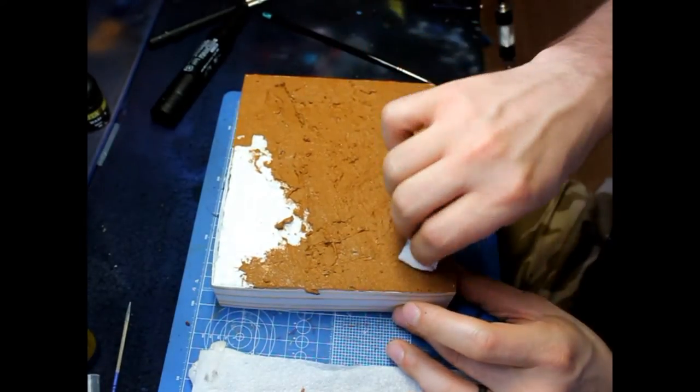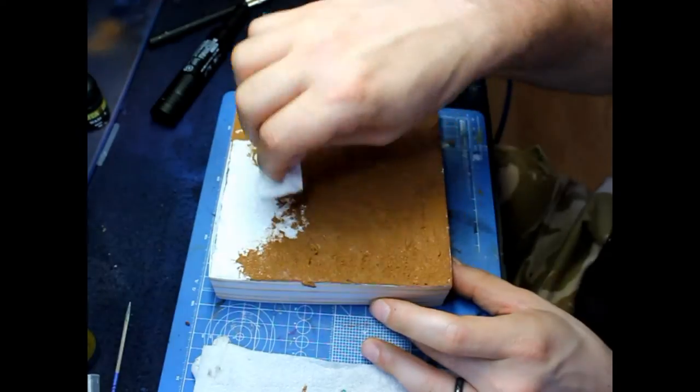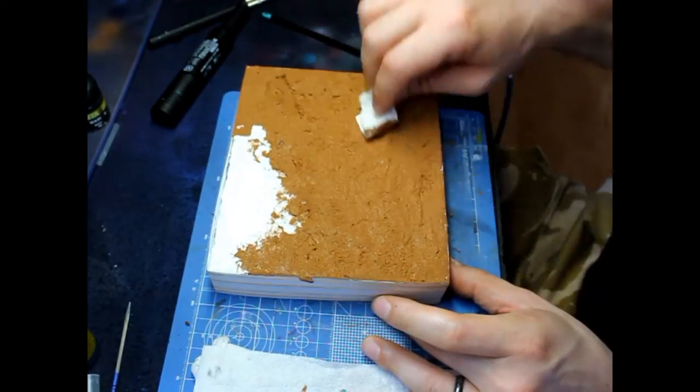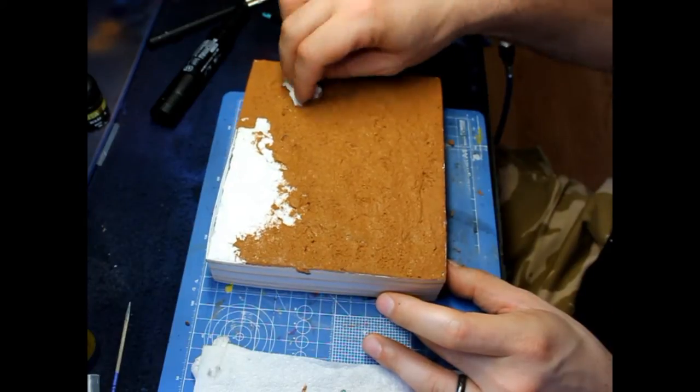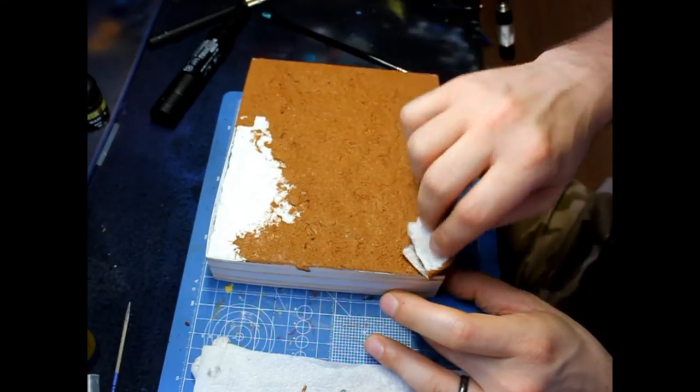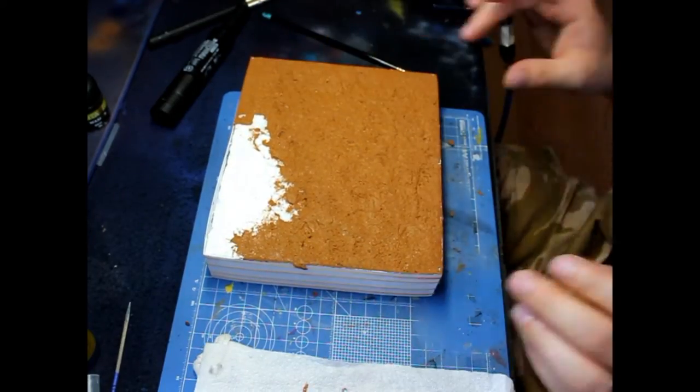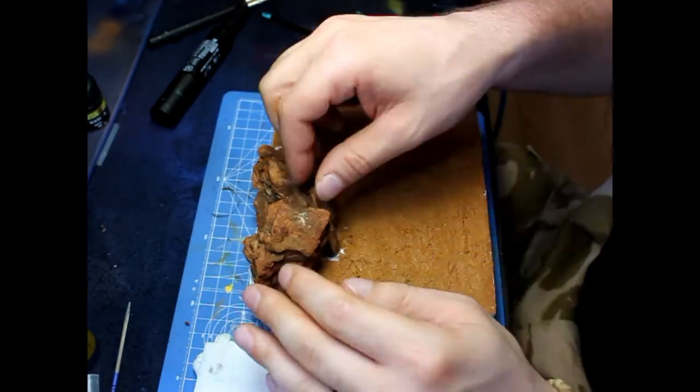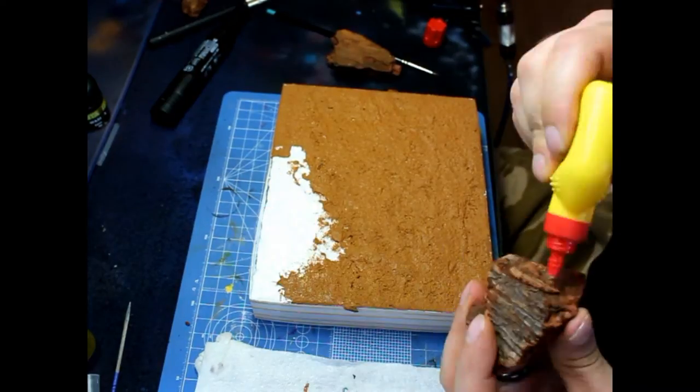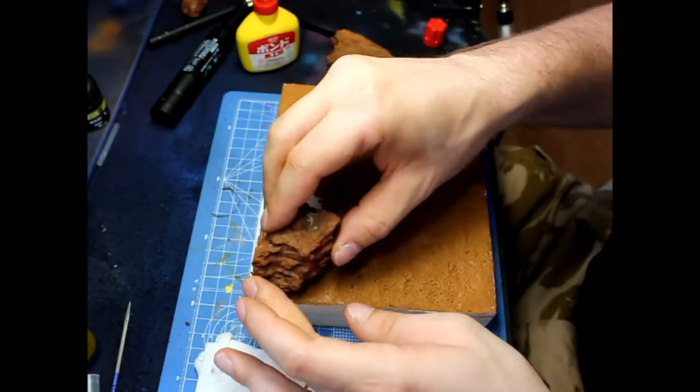So here I'm applying the basing material which is like a Tamiya diorama effect, so here it's all applied everywhere on the model and basically what I'll do is I'll take a Scott towel and then I'll just tap it onto the model and just make sure that everything is smoothed out everywhere.